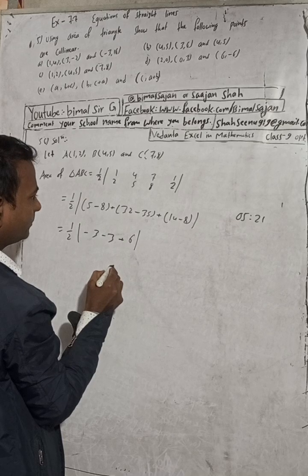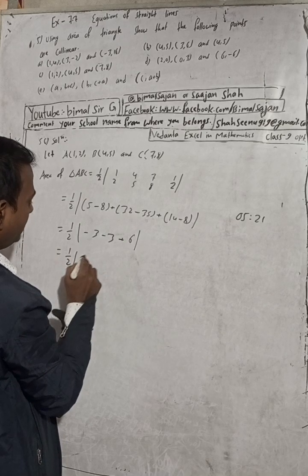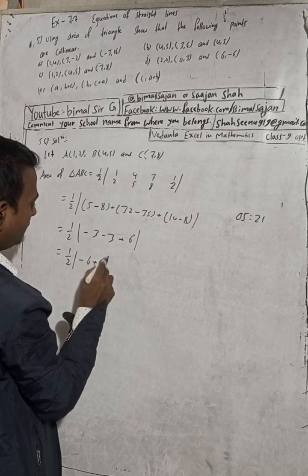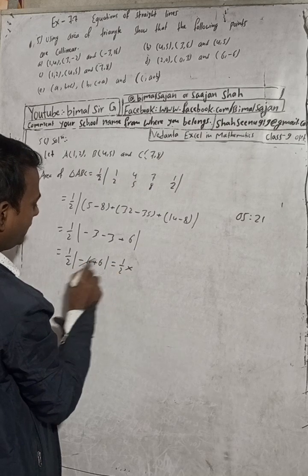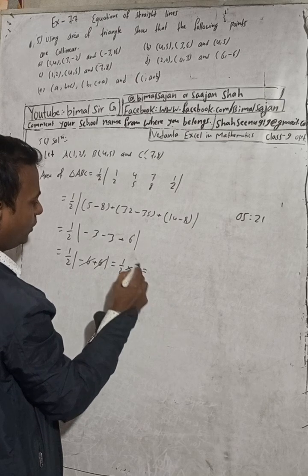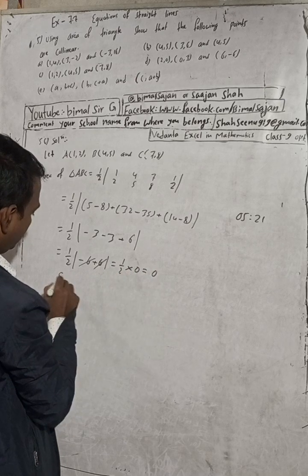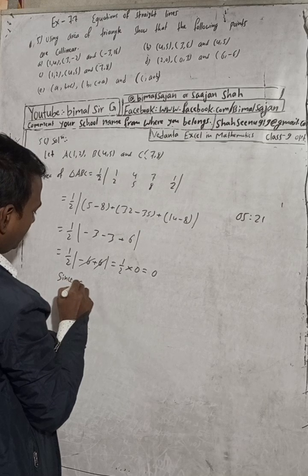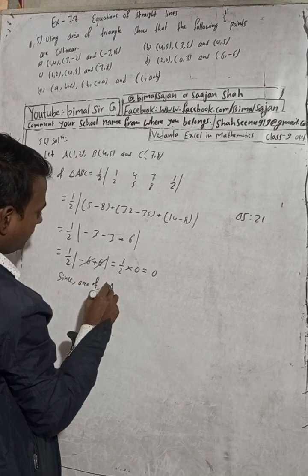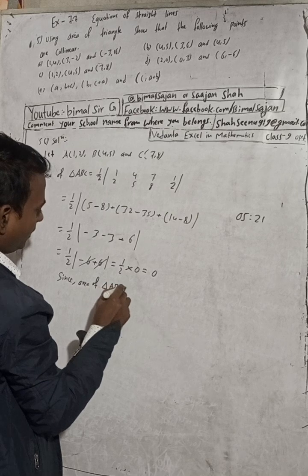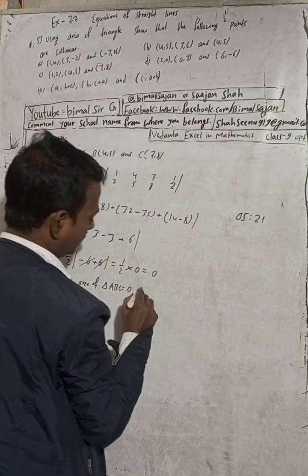Now we see: 1/2 times (minus 3 minus 3 plus 6). That is 1/2 times (6 minus 6) — the plus 6 and minus 6 cancel, giving 0. So 1/2 into 0 equals 0. Since the area of triangle ABC equals 0, the given points are collinear.